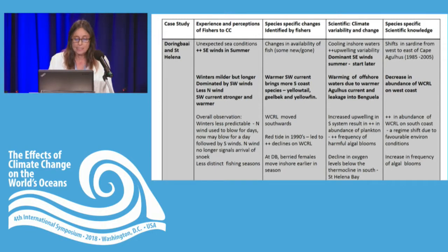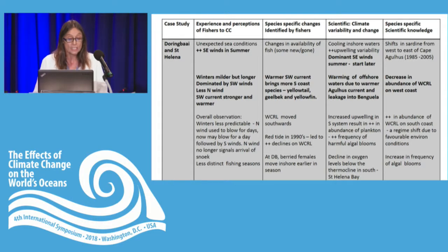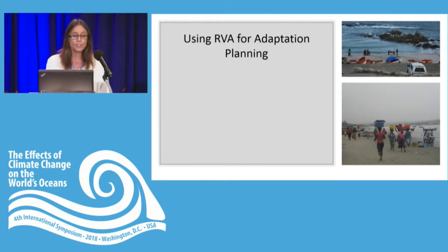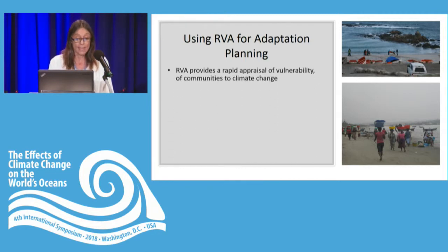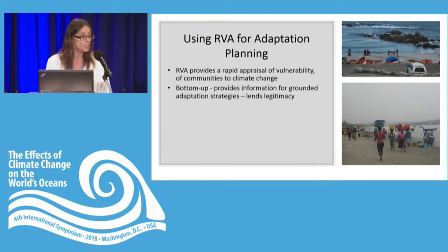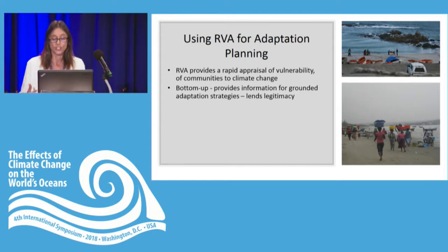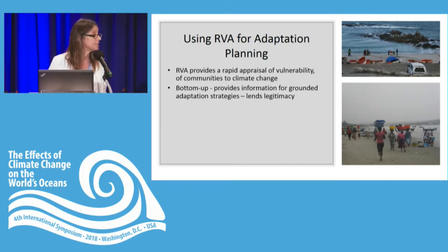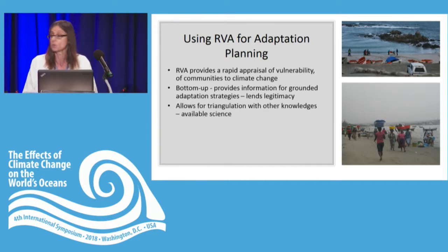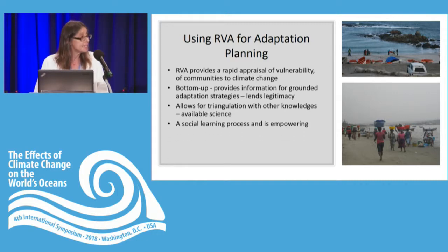In column two of our framework, we documented the experiences and perceptions of fishers to climate change and the species-specific changes they identified. We then looked in columns three and four at the scientific knowledge and looked at areas of correlation. So how do we use this RVA vulnerability assessment information for adaptation planning? The RVA can provide an appraisal of vulnerability of communities to climate change — it is very much a bottom-up process. It provides information for grounded adaptation strategy, lending legitimacy to the process and the kinds of strategies potentially implemented. It also allows for triangulation with other knowledges and available science, and critically it is a social learning process that is empowering for those who participate in it.